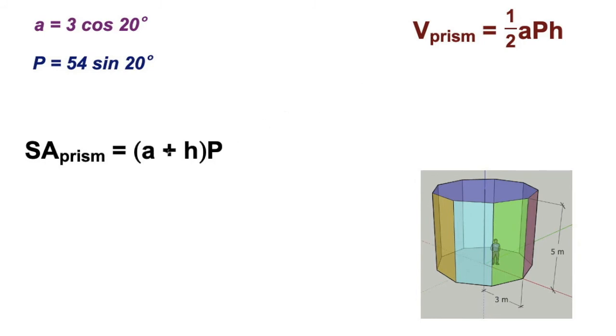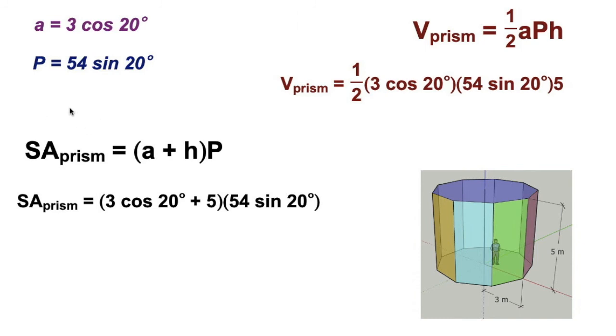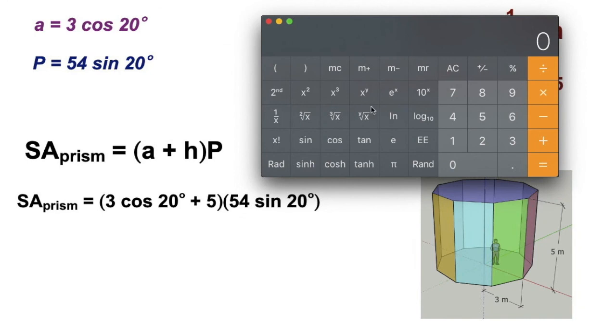And we're going to use these two formulas. I mean, honestly, if you're not comfortable with this, you could say two times the base plus lateral area. But we'll do our substitution. Over here, I'm going to take my apothem plus the height and multiply it times my perimeter. Let's do that one first. So I'm going to say cosine 20 times three, and I'm going to add five to it equals, and multiply times 54 times sine 20 equals.